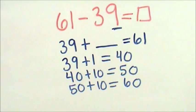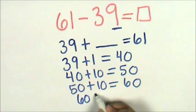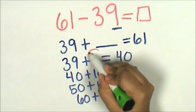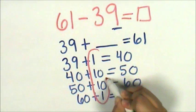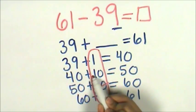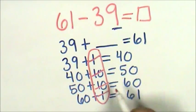And now I just need to count on one more. Sixty plus one equals sixty-one. That means sixty-one minus thirty-nine is ten, twenty, twenty-one, twenty-two.